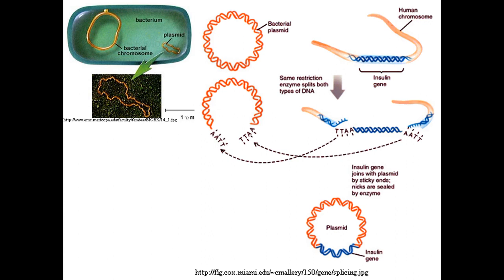What we have here is a bacterial cell at the upper left. Bacteria have circular chromosomes — a large circular bacterial chromosome and smaller sections of DNA called bacterial plasmids. Quite often, these plasmids carry genes for antibiotic resistance. If a bacteria is resistant to a particular antibiotic like penicillin, that resistance gene is usually housed on these bacterial plasmids. These plasmids can also be exchanged between different bacteria, spreading antibiotic resistance.